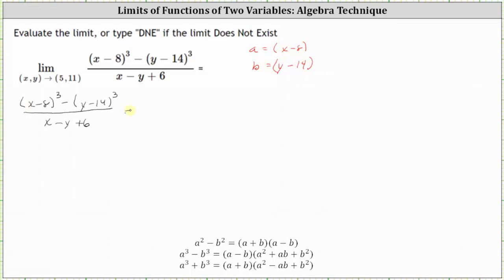So starting with the original function, we will factor the numerator, where we begin with a minus b, which in our case is the quantity (x - 8) minus the quantity (y - 14). And then we have times a squared, which in our case is the square of (x - 8).